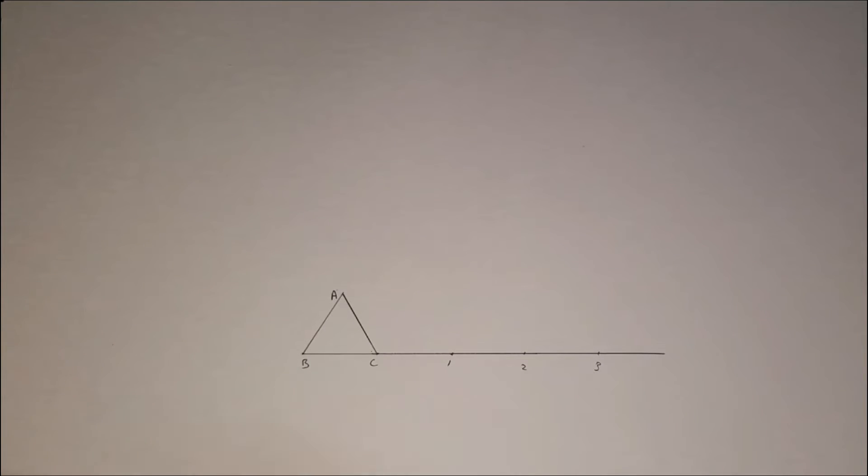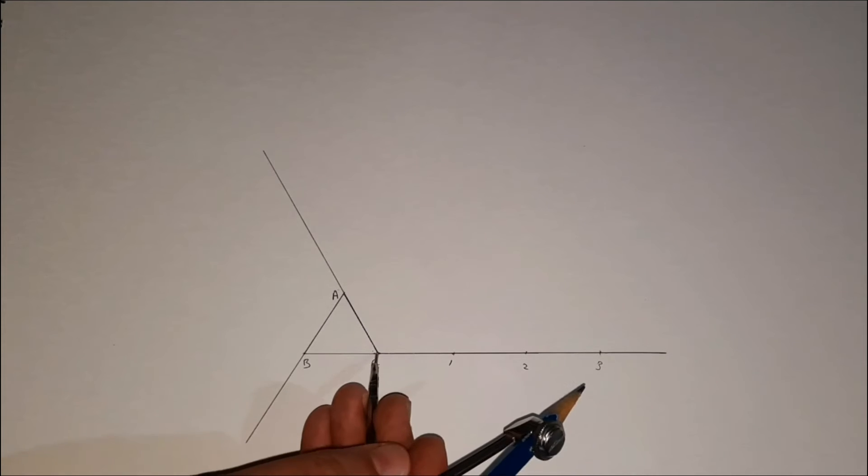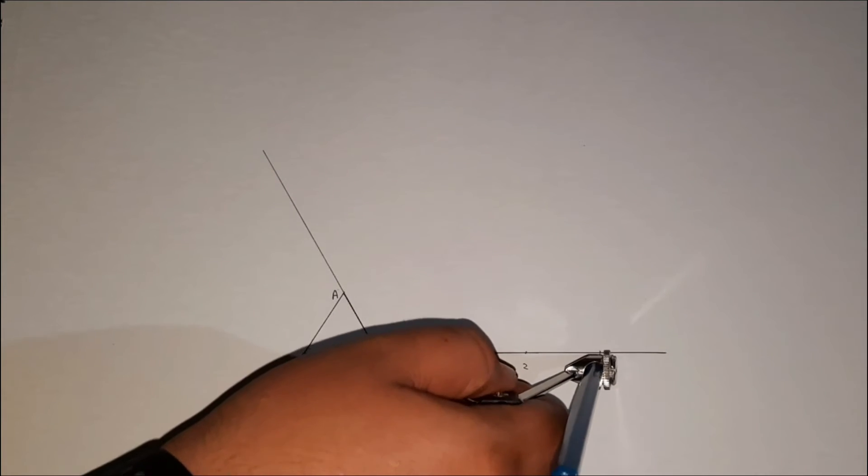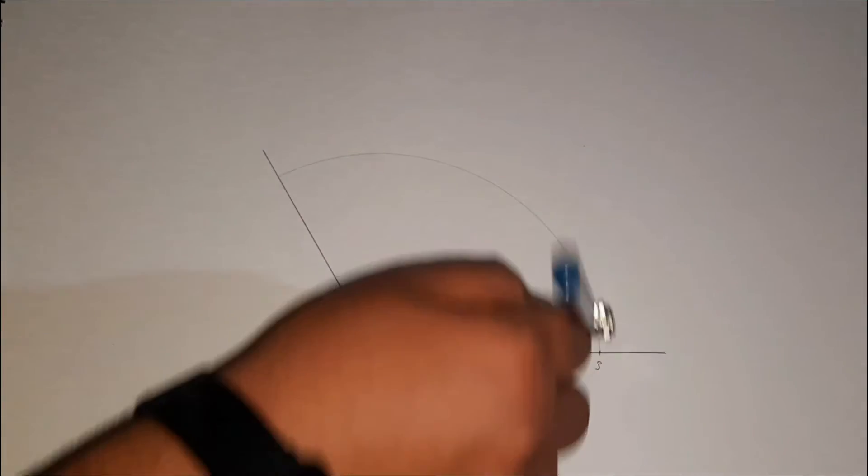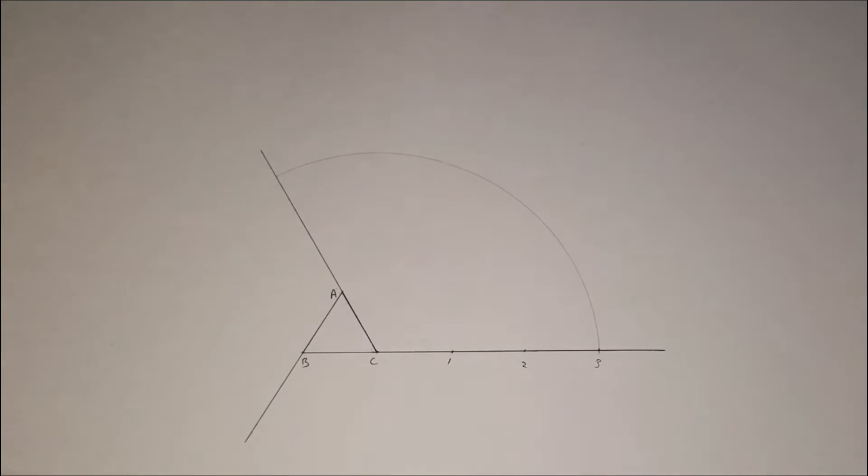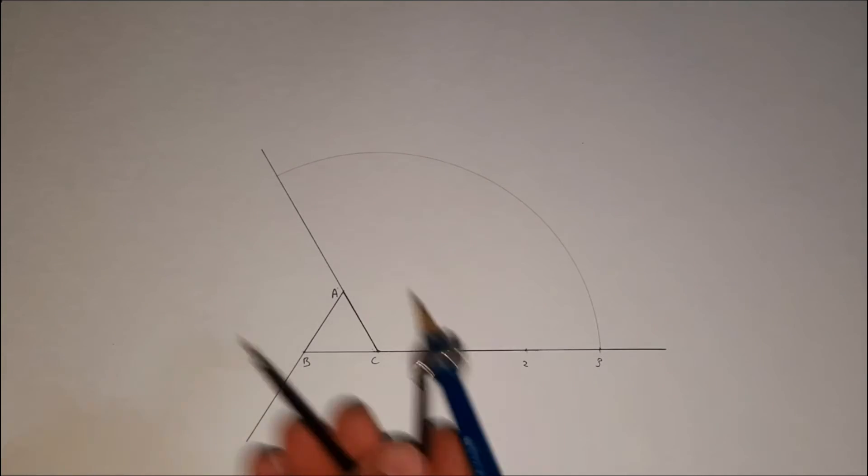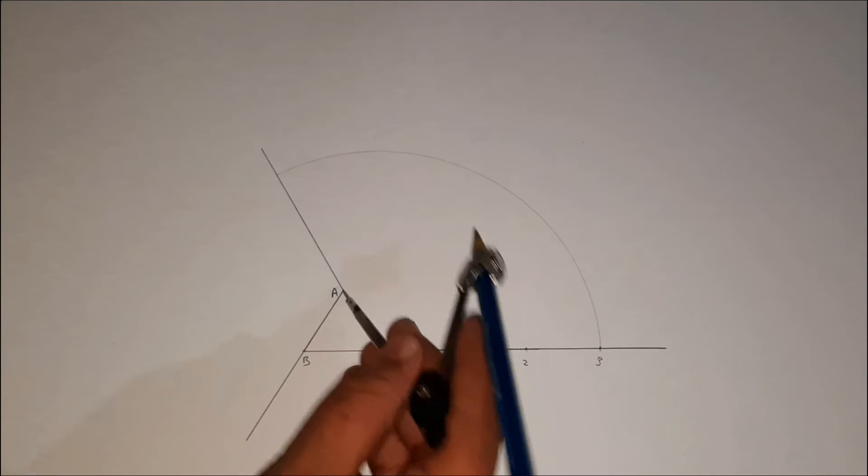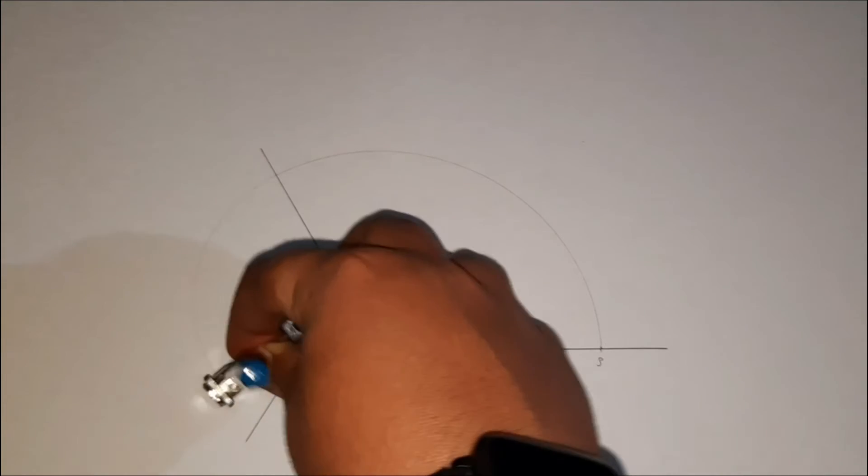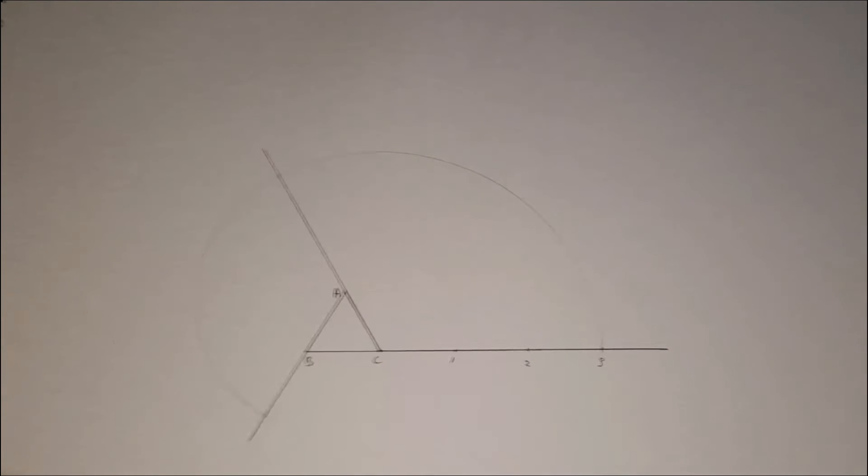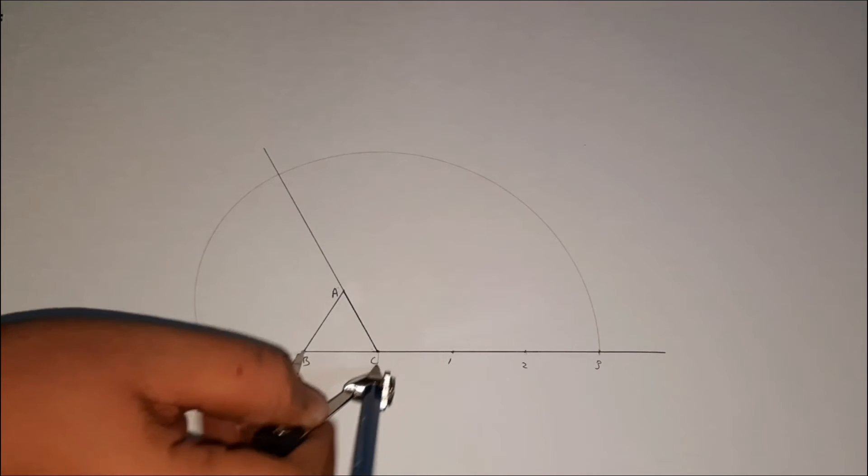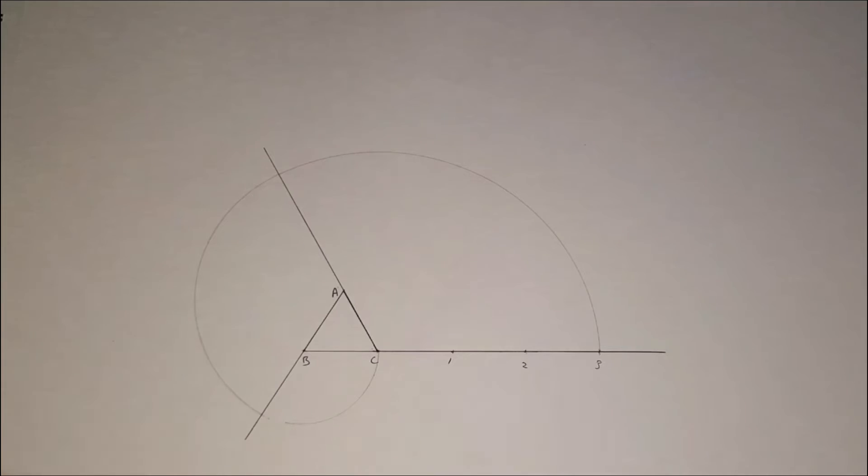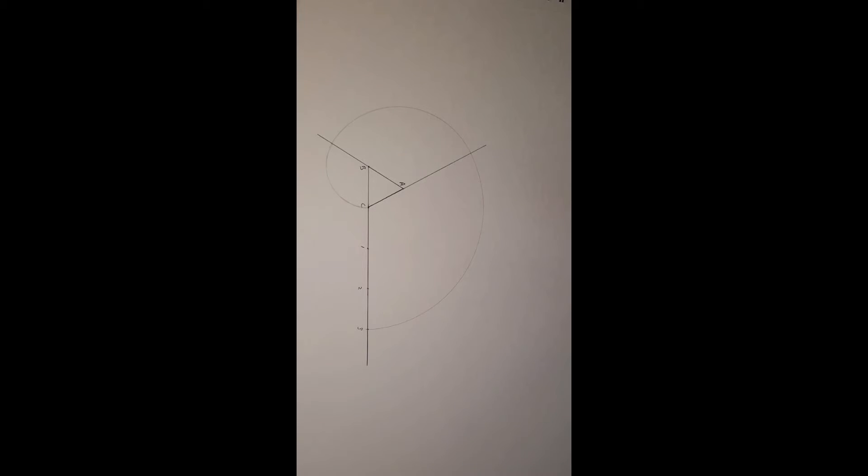Now we will extend all the 3 vertices. We will take C3 as radius and C as center and make a part of circle. Now taking C2 as radius and A as center, now taking C1 as radius and B as center. Here the involute of triangle is ready.